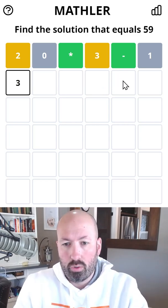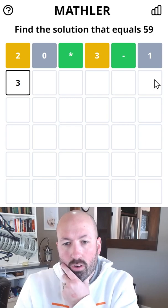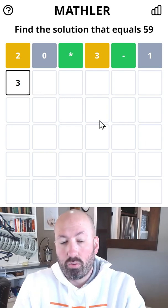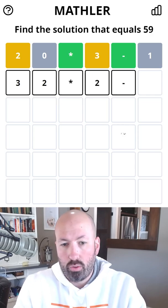So it's got to be 30-something times 2, subtract another number. So we could do 32, 33, or 34, and that's it. We've only got three options, so I'm just going to start with 32 first.